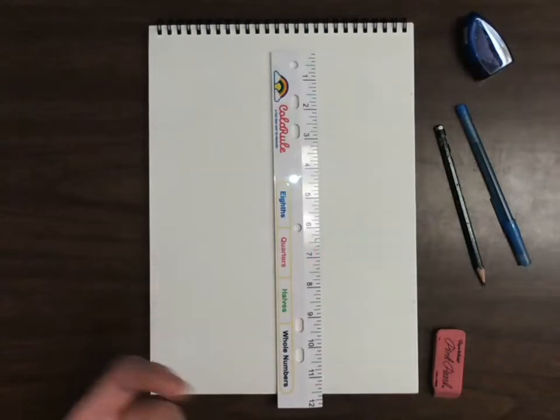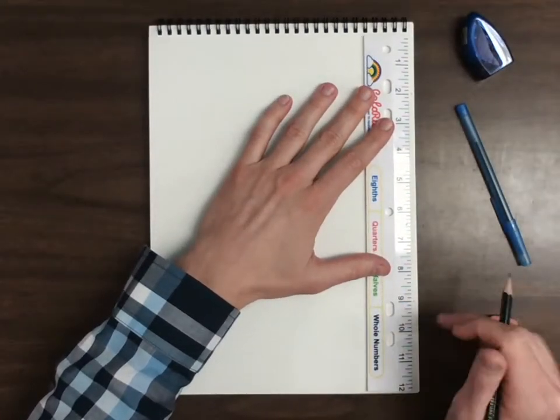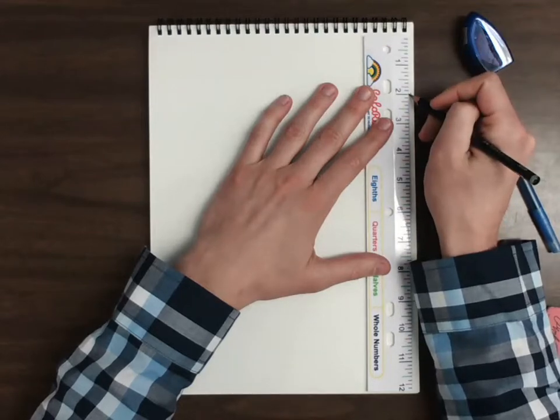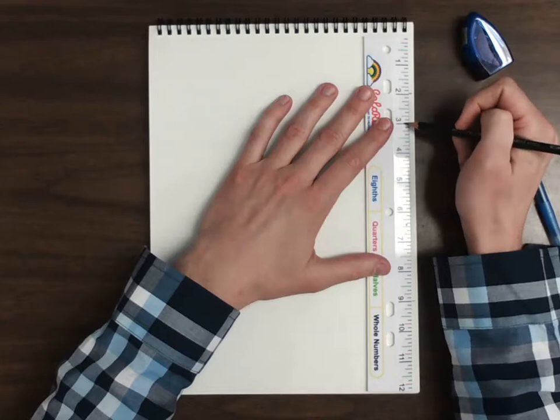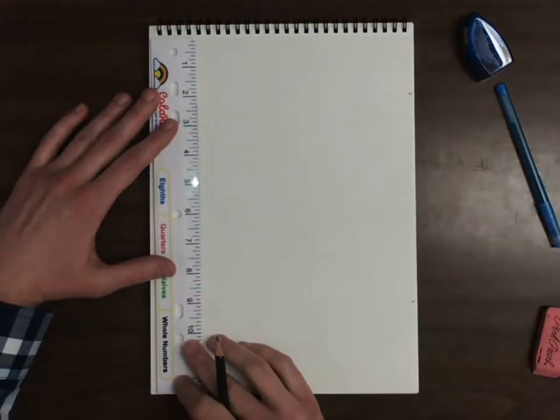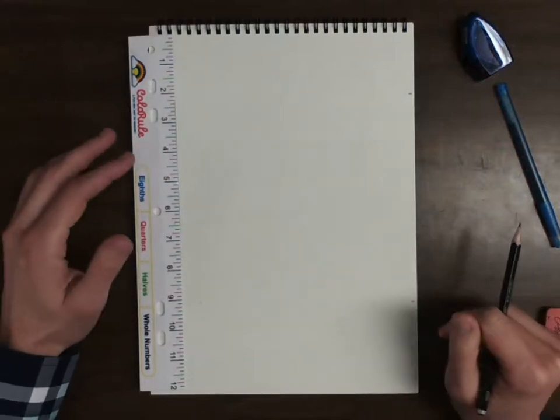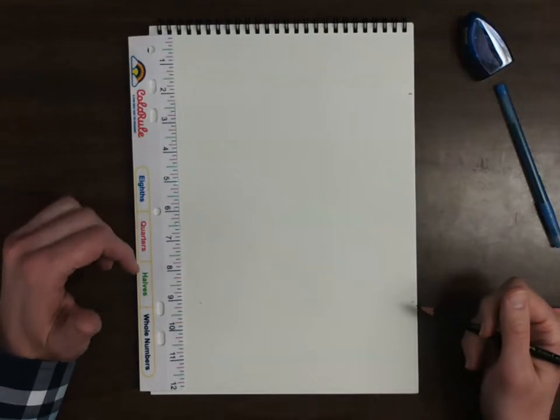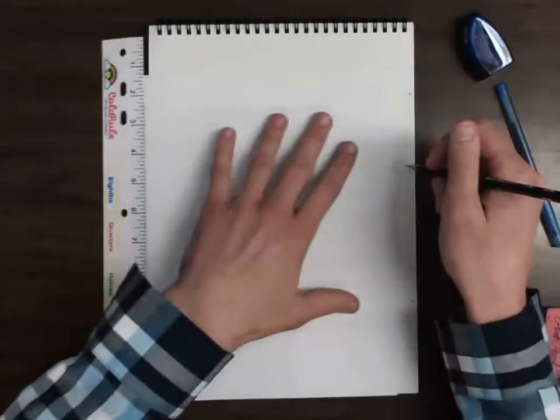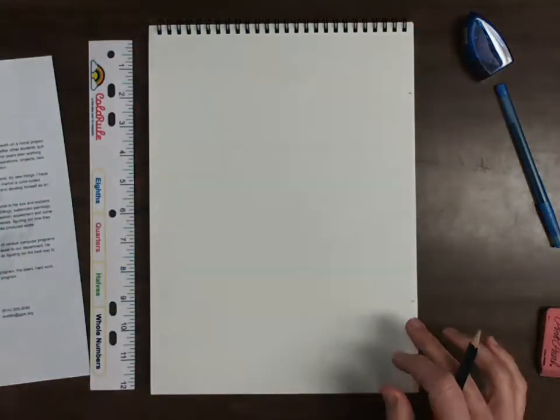So we're going to do a value scale similar to the one that you did in drawing one. We are going to start with pencil, and I'm just going to come in with my ruler. My paper is 12 inches long. I'm going to have seven boxes, so I'm going to just go down to the two right here, make a mark, and then make a mark at the nine. Now utilize your resources. If you don't have a ruler at home, try and use something of a straight edge, like a piece of paper.